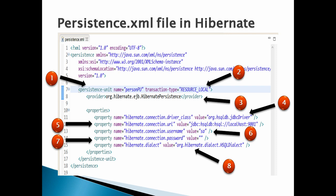Number two: the transaction-type attribute holds two values — JTA and RESOURCE_LOCAL. The JTA value is used in a Java EE environment, while RESOURCE_LOCAL corresponds to a local Java environment. Here we have created the persistence unit in a simple Java application by providing the value as RESOURCE_LOCAL.